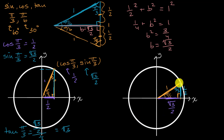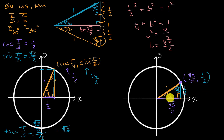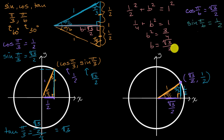We know this other length is square root of three over two. That gives us the coordinates of the point where the radius intersects the unit circle: the x-coordinate is square root of three over two, and the y-coordinate is one half. That immediately tells us cosine of pi over six equals square root of three over two, and sine of pi over six equals one half. Notice we've essentially just swapped these two values, because now we're taking sine and cosine of a different angle on the same 30-60-90 triangle.